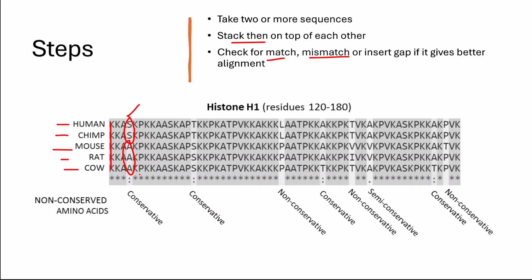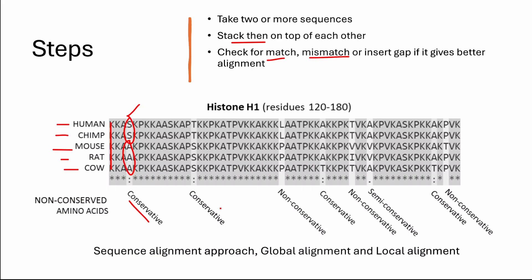In this way we do sequence alignment to look for sequence similarity, which can tell us the conservation of sequences that are evolutionarily important. We have two approaches of sequence alignment: the first one is global alignment and the second is local alignment. Let's move forward with global alignment first.